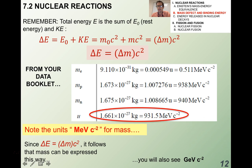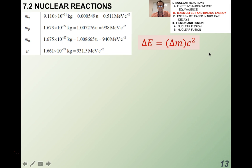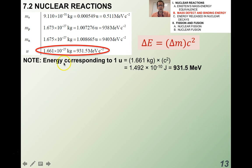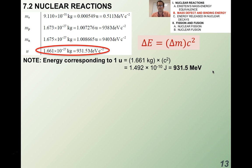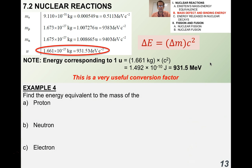Note that the energy corresponding to one atomic mass unit is 931.5 mega electron volts. That's a really important number that comes up a lot in problem solving — it will appear again and again. Take note of that 931.5; it's a very useful conversion factor.